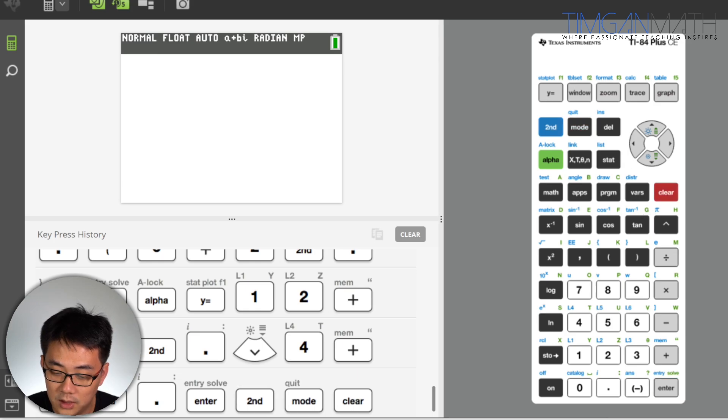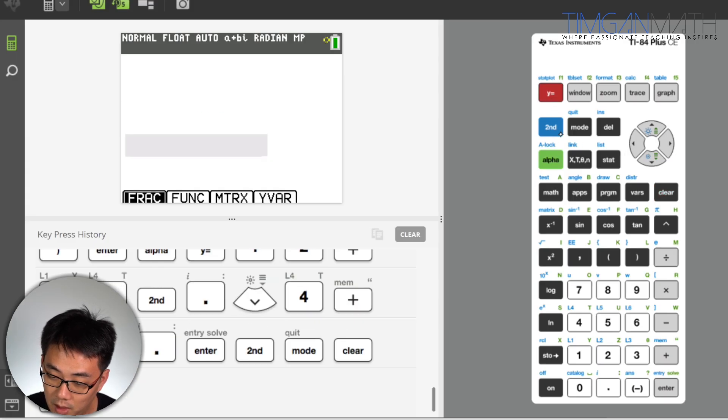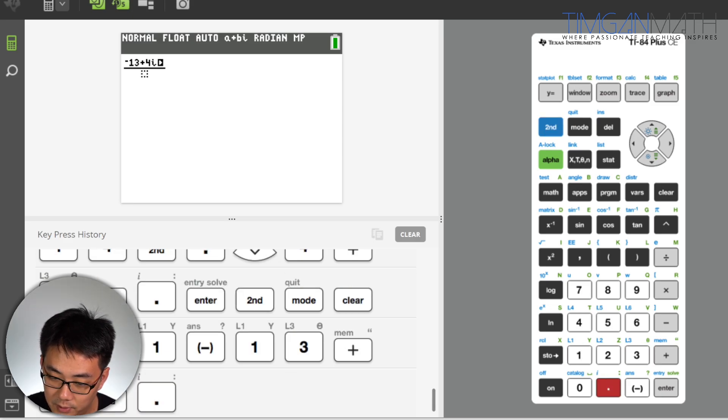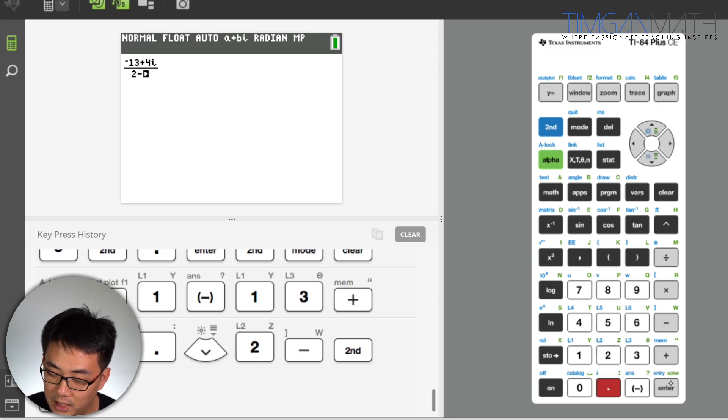Just go to your GC. Remember, you can use GC. This is because it's faster and also less prone to careless mistakes. Unless if you type wrongly on the GC, that one cannot help you.